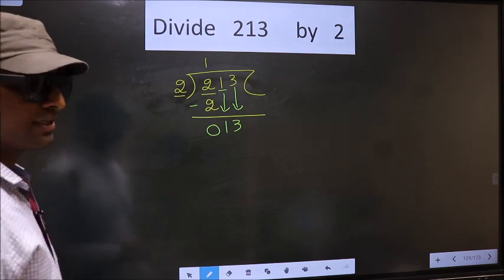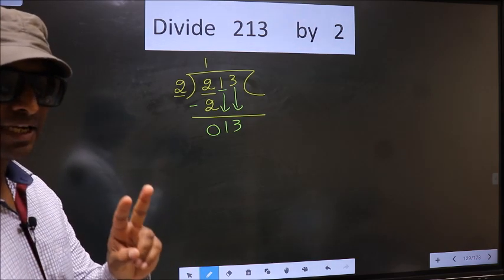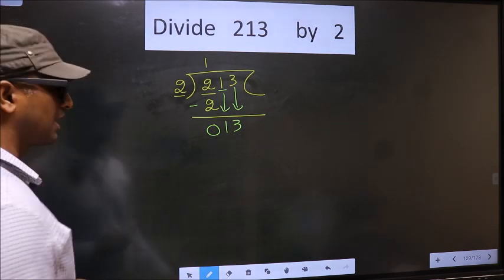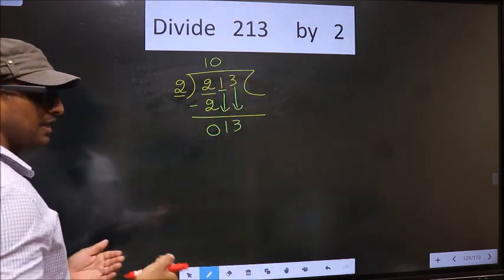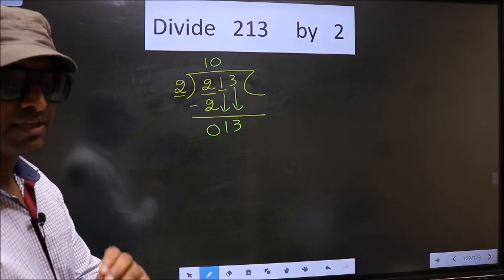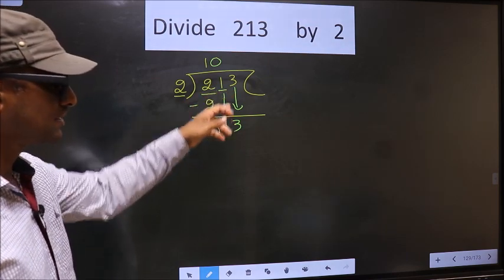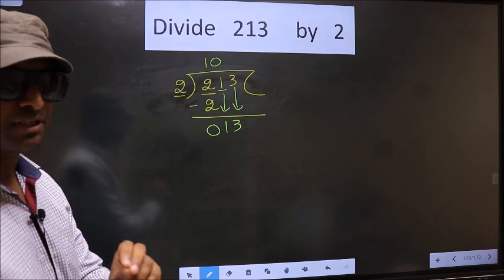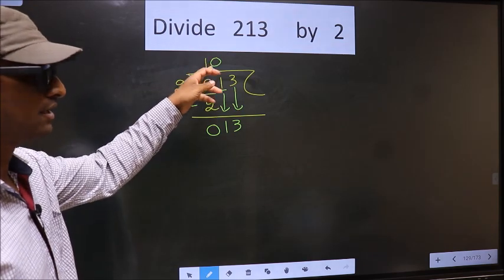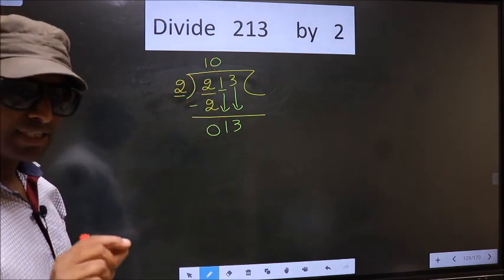Here you should remember, whenever you are bringing down 2 numbers, compulsory you should put 0 in the quotient. I repeat, whenever you are bringing down 2 numbers, at the same time, compulsory you should put 0 at the quotient. Clear with that point?